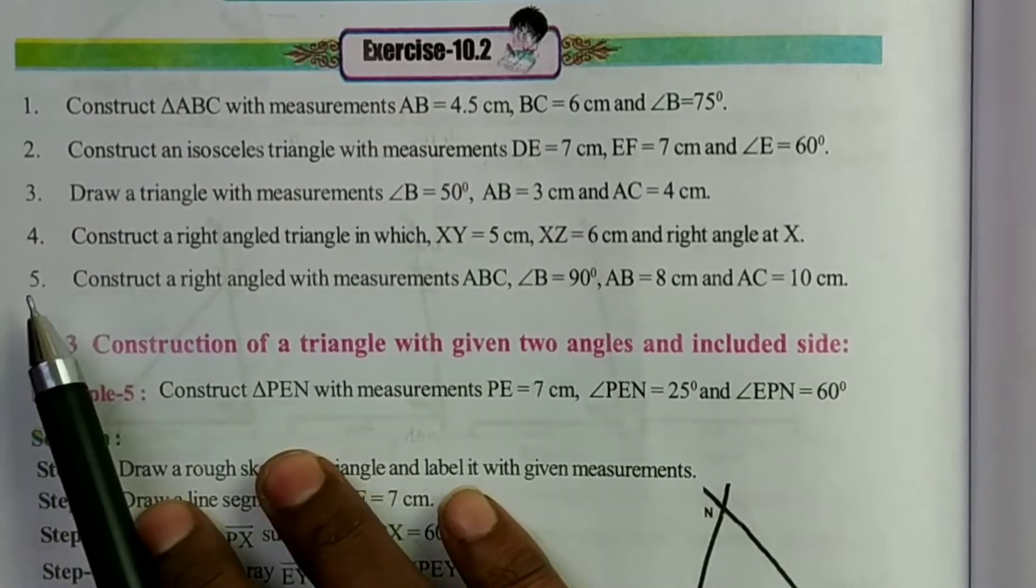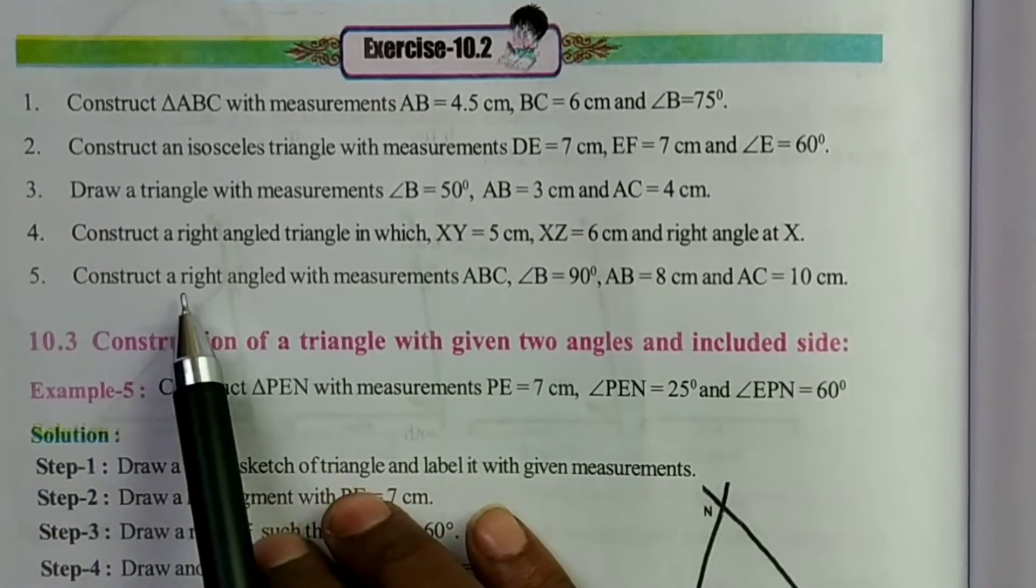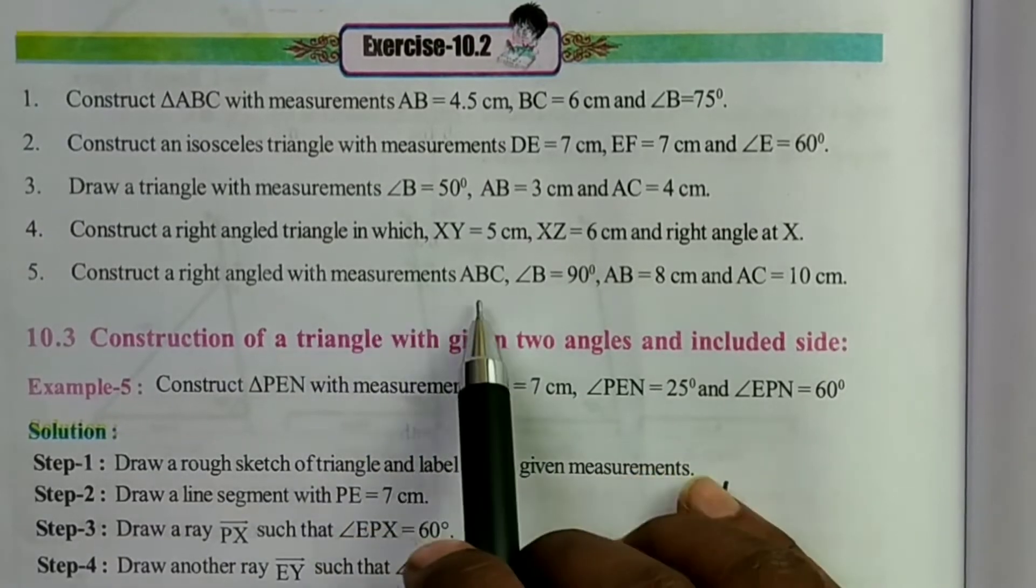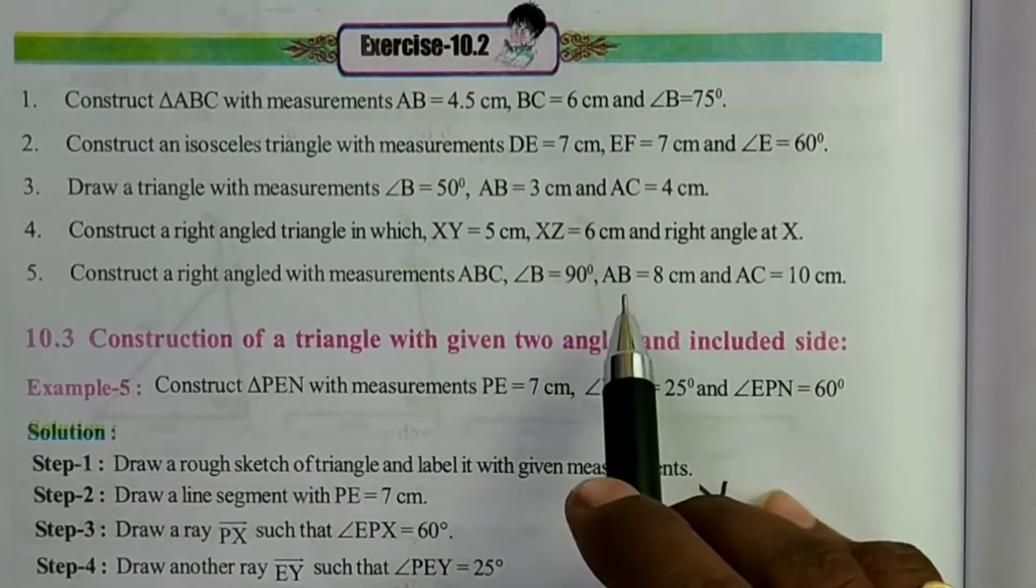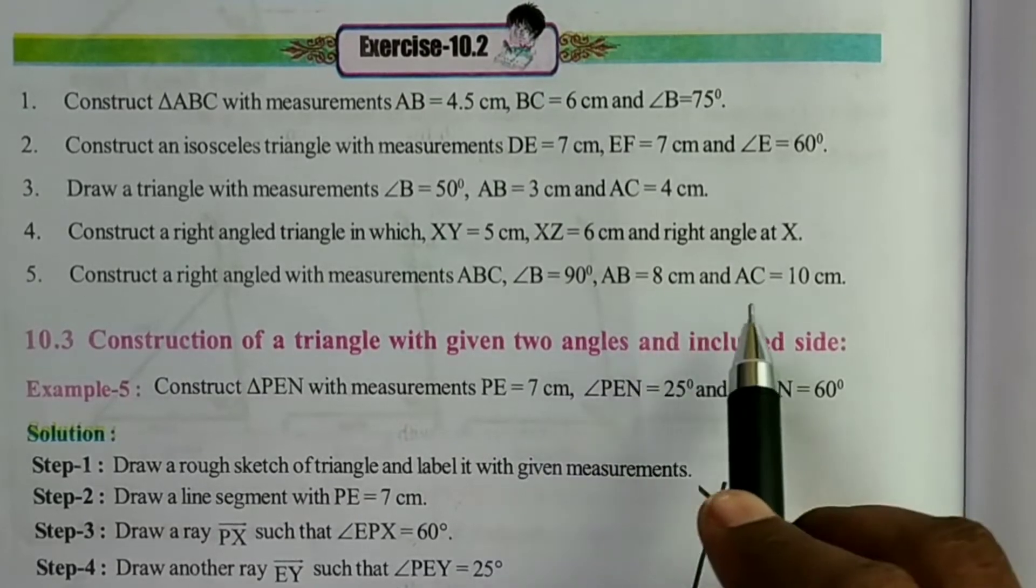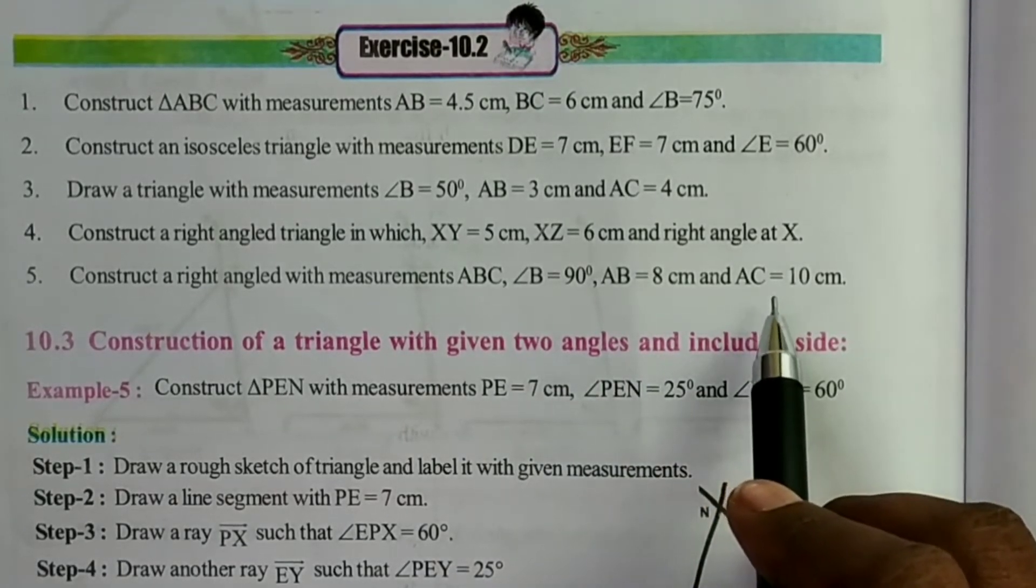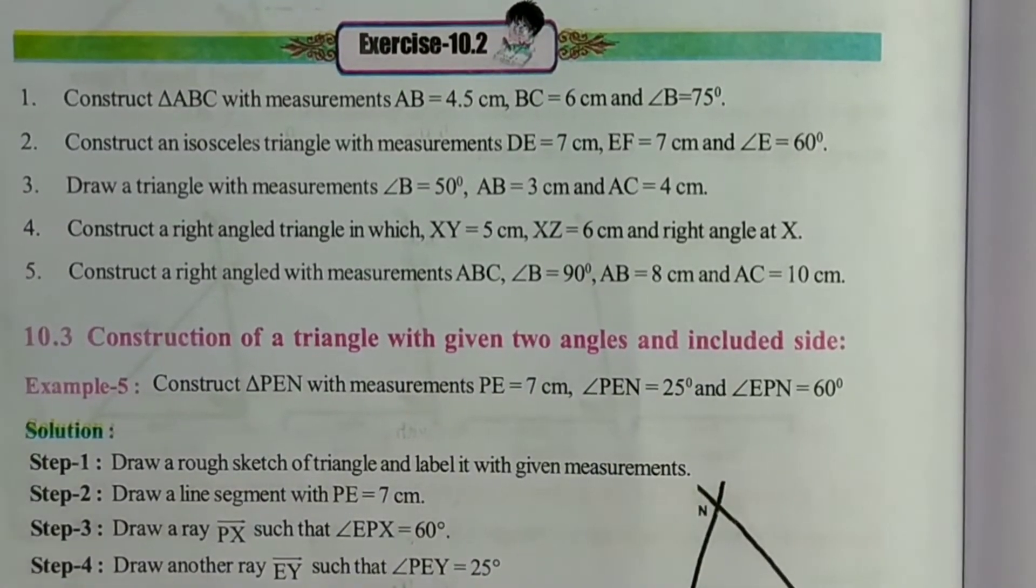The construction 5th one is: construct a right angled triangle with measurements angle B equals 90 degrees, AB equals 8 cm, and AC equals 10 cm. This is also an easy construction.